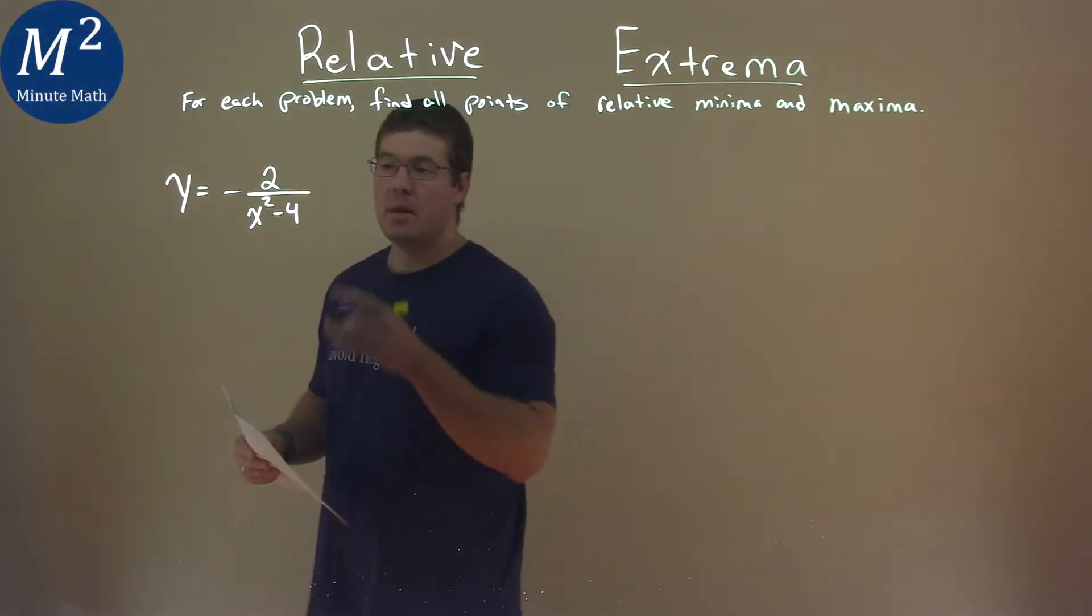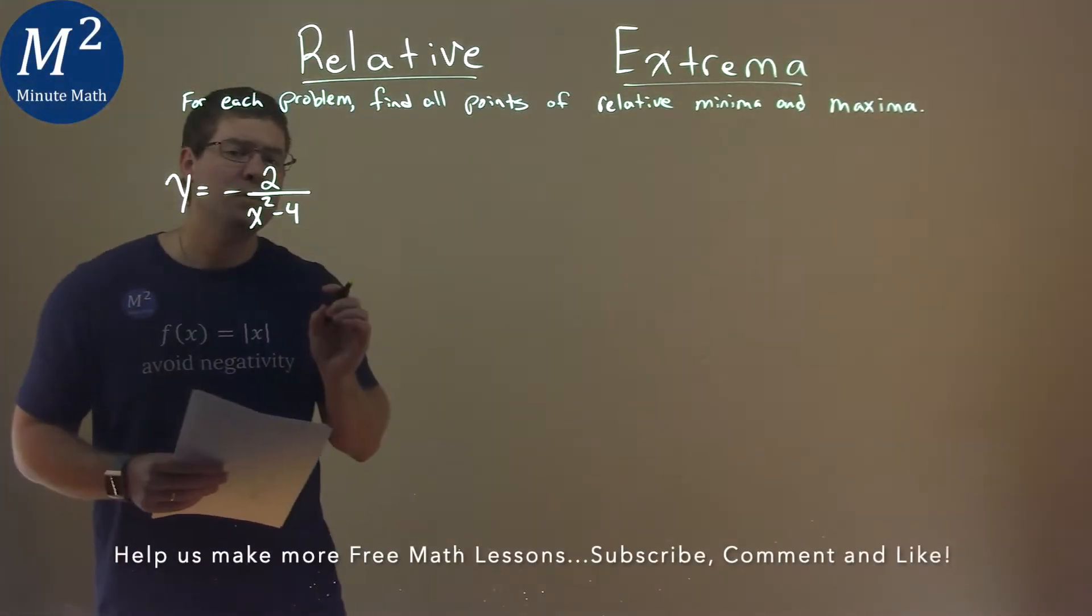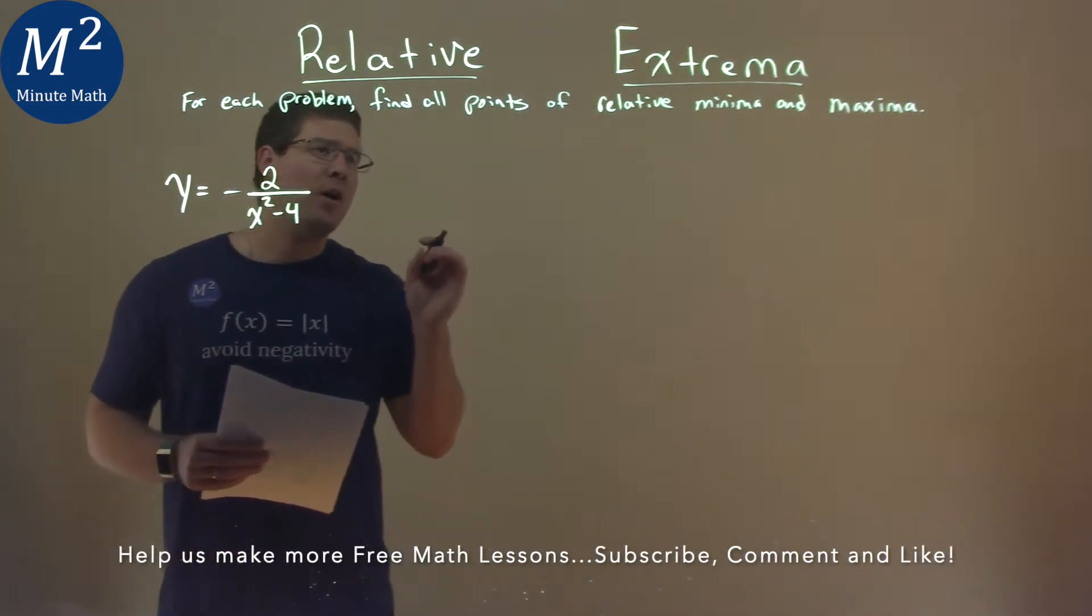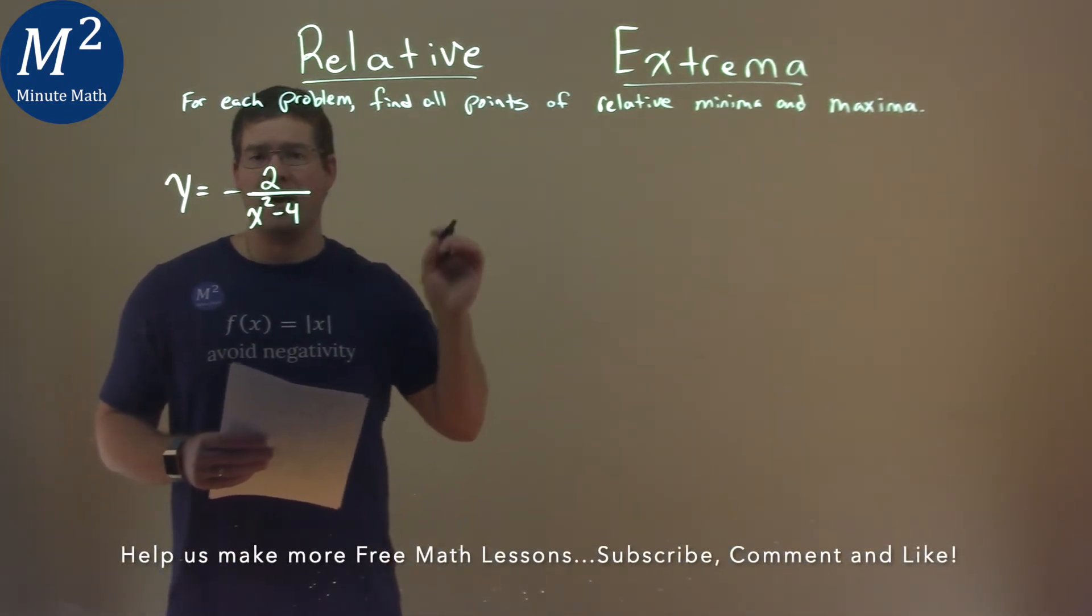We're given this problem right here: y equals negative 2 over x squared minus 4, and we want to find all the points of relative minimum and maxima.